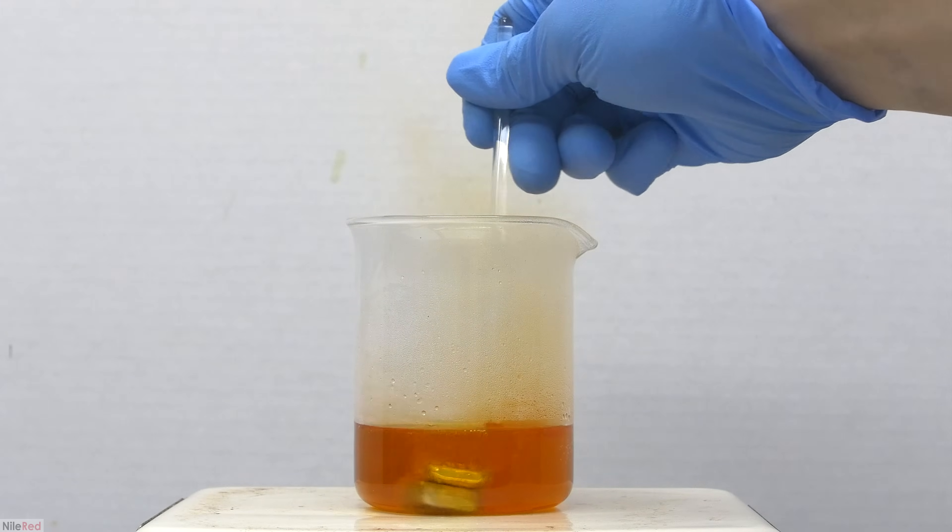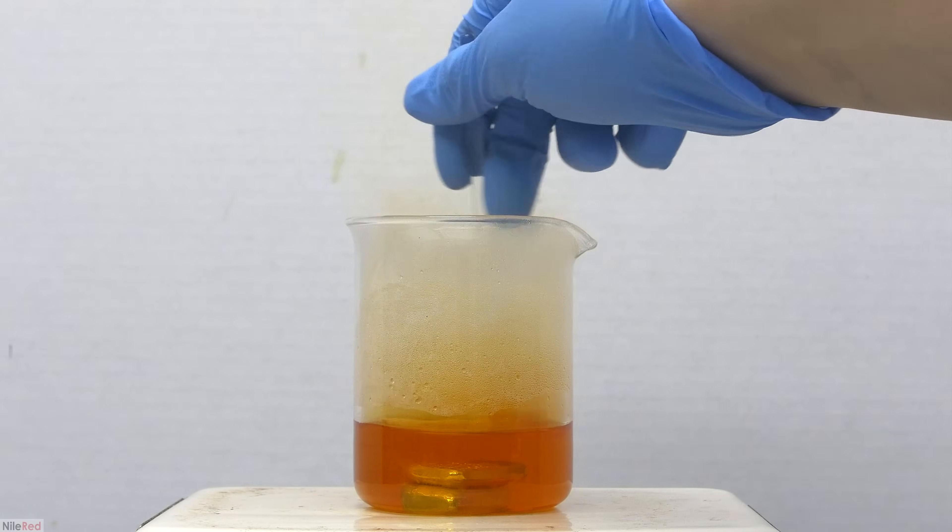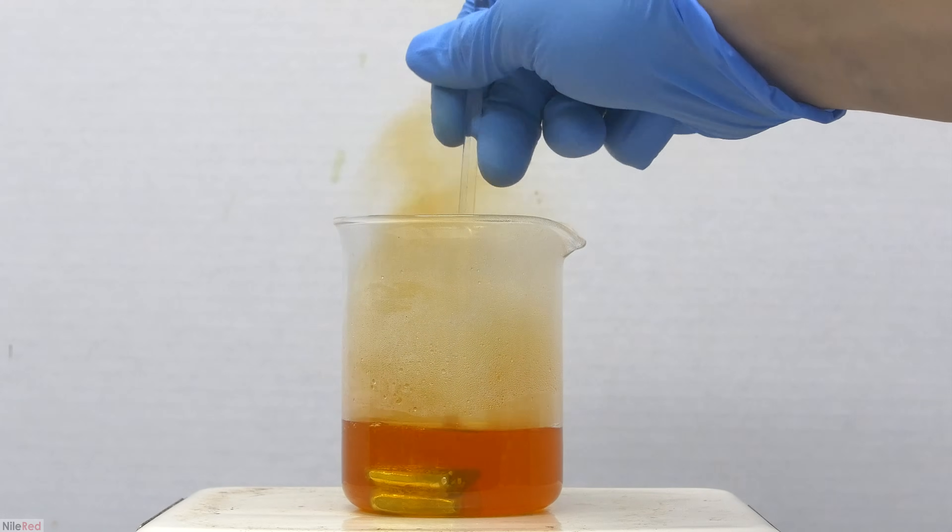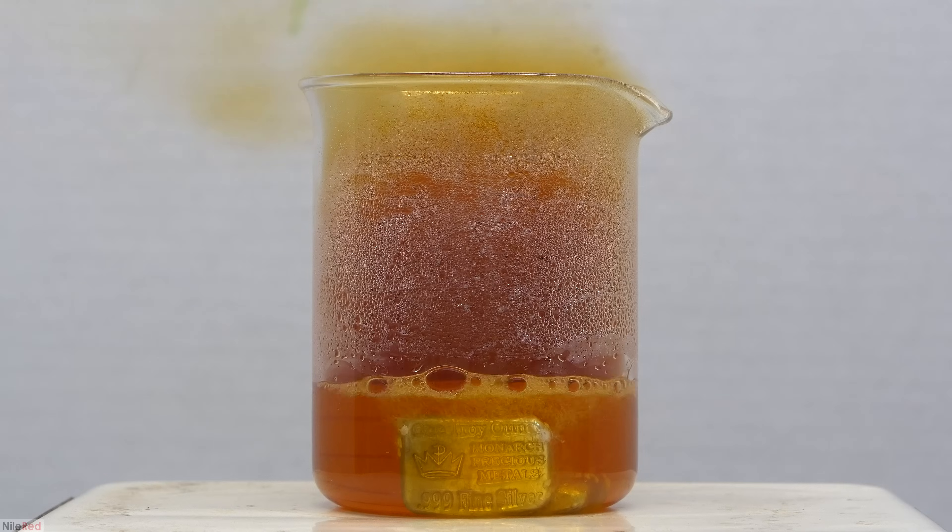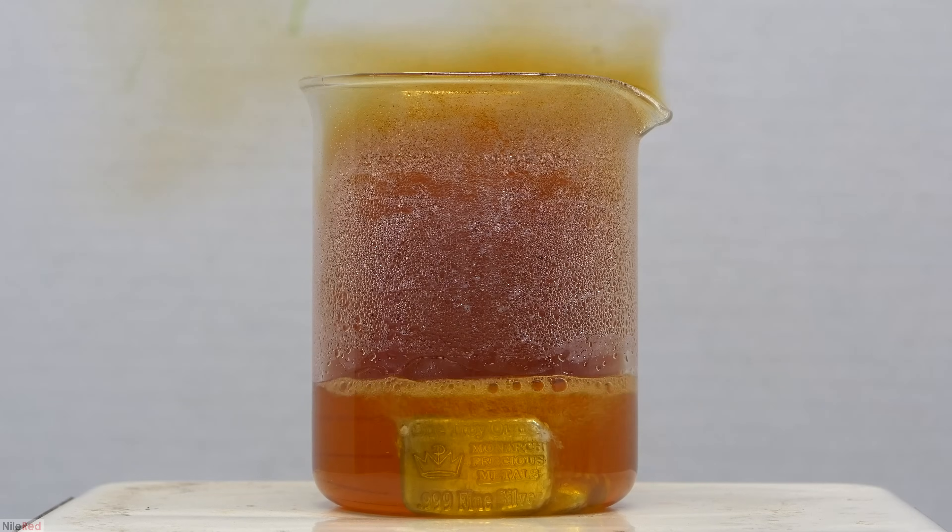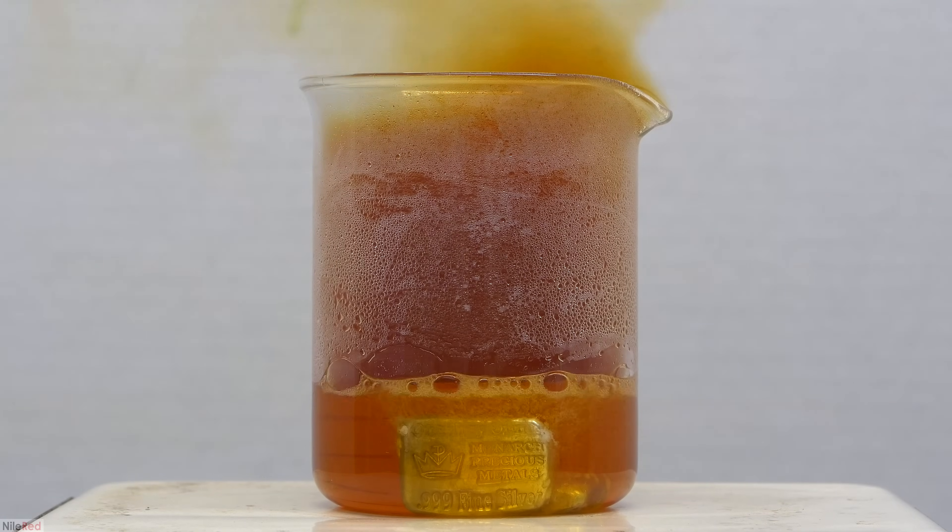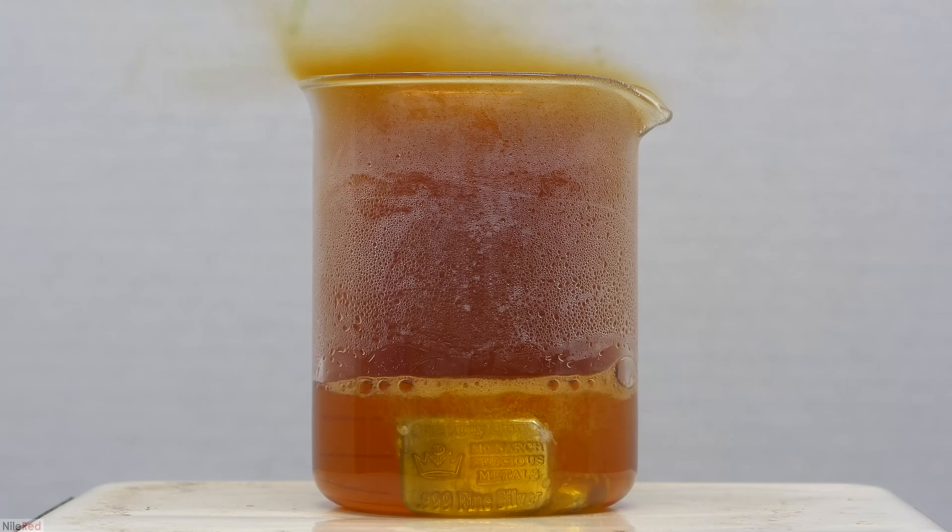As the reaction starts to pick up, we'll have a lot of bubbles coming off the silver metal and we'll start to release some nitrogen dioxide fumes. The fumes will get thicker and thicker and eventually the reaction will take off. Once the reaction really got going, I turned off the hot plate to prevent it from getting out of control.